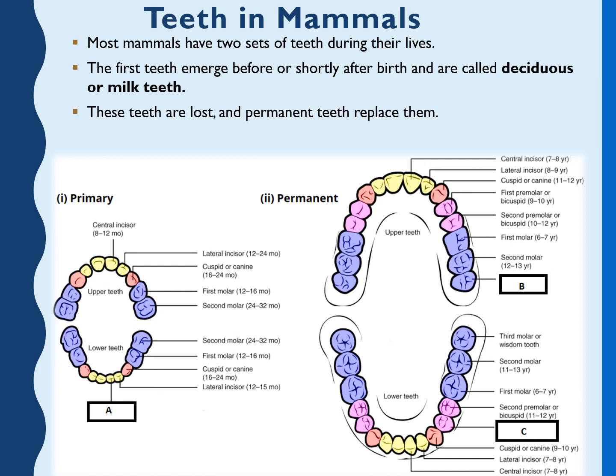Human dentition is composed of two sets — primary and permanent — organized into two opposing arches. The upper arch is called the maxillary arch and the lower is called the mandibular arch. These can be divided down the midline — the mid-sagittal plane — into left and right halves.